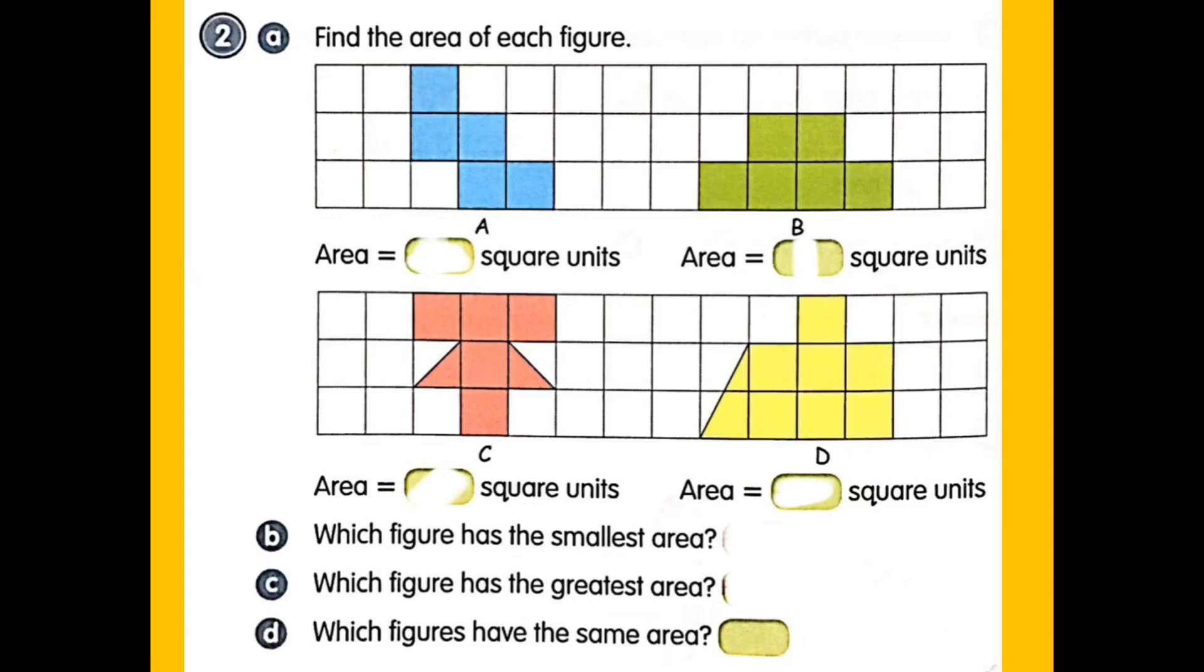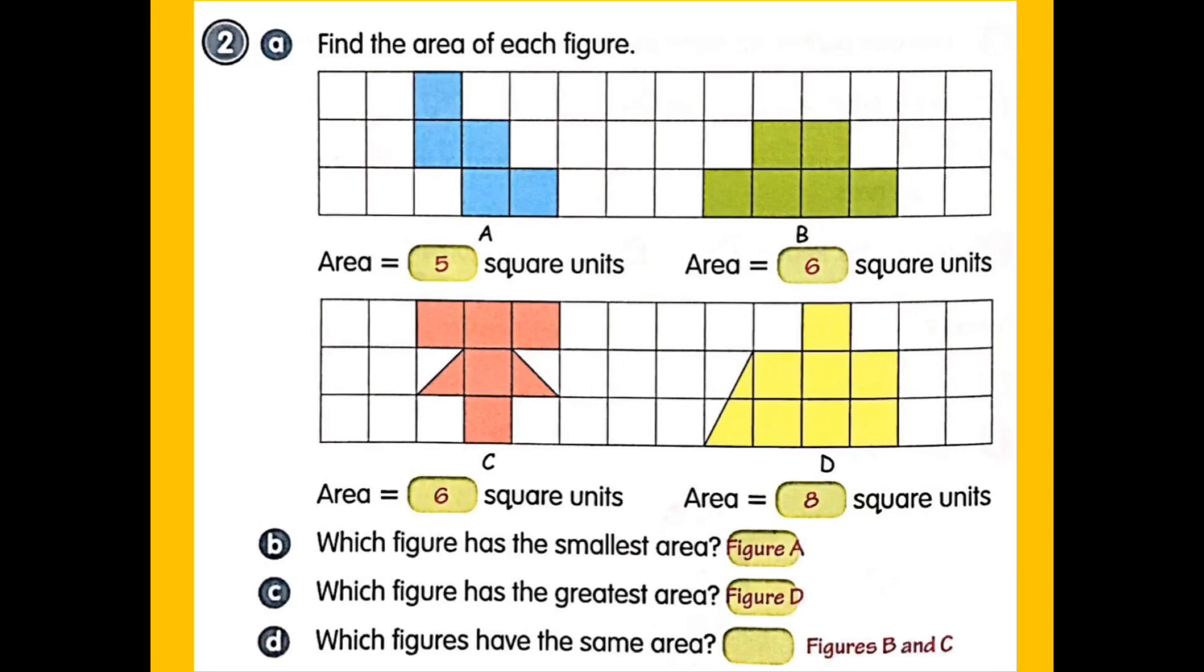Let's proceed to the next number. Pause this video for a while as you try to answer item number two. Once you're done, check if your answers are correct. Again, to be sure of our answers, let us write the numbers inside the square tile as we count. Do not forget to connect two half-squares to make one square tile. Check if your answers are all correct.